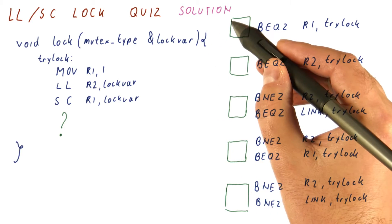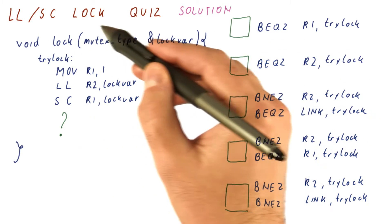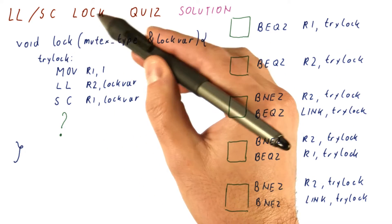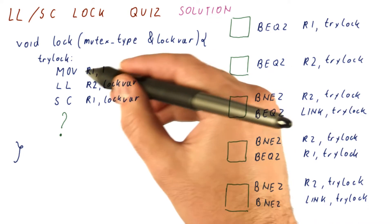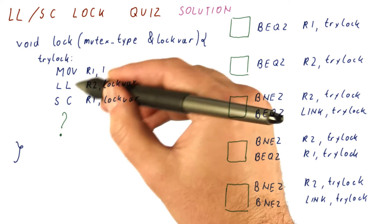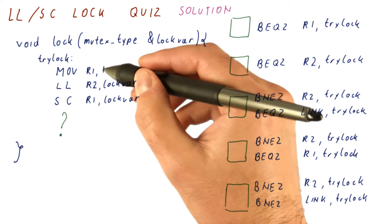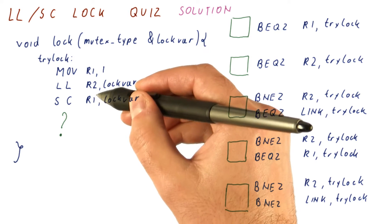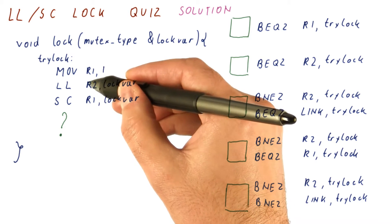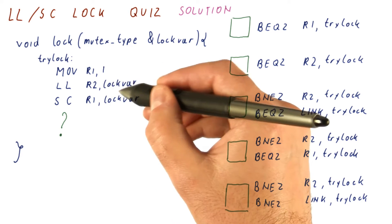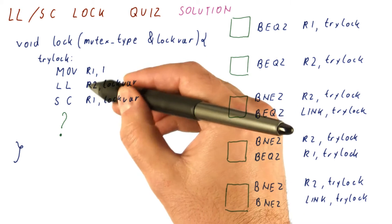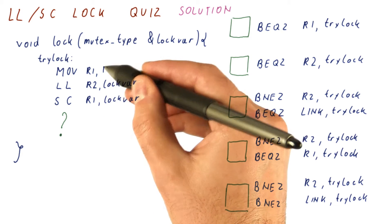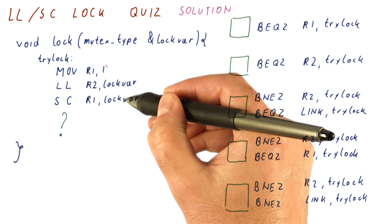Let's look at the solution to our load-link store-conditional lock implementation quiz. This is what this code is trying to do: it's putting one in R1, then loading the current value of the lock variable into R2, and then trying to put a one into the lock variable.